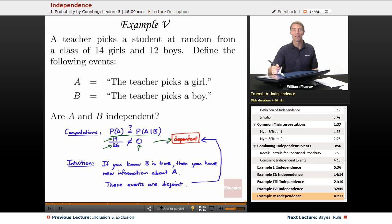That's all a fancy way of saying that these events are disjoint. They don't overlap each other, so if you know that one is true, then you know that the other is false.